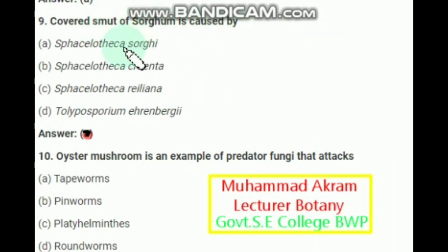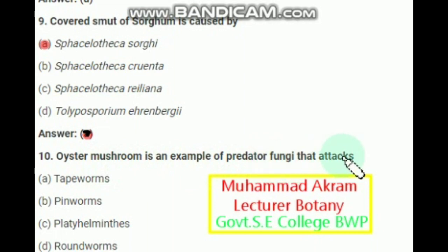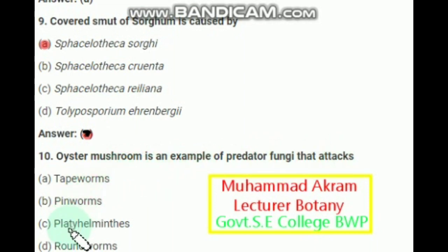The oyster mushroom is an example of predator fungi that attacks which organism? Tapeworms? No. Pinworms? No. Platyhelminthes? No. Roundworms? Yes. The right option is roundworms — oyster mushroom attacks roundworms.